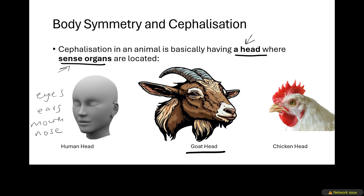For example, this is a human head — it has got eyes, a nose for smelling, and a mouth. Hence we can say that humans have got cephalization because they have a head with sense organs. Just like this goat here — it has got eyes, a nose, and a mouth. And also this chicken has got a mouth, eyes, and a head. Hence, all these animals have cephalization. Cephalization is basically when an animal has got a head with sense organs.